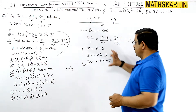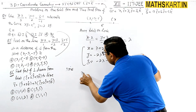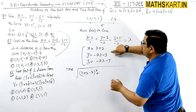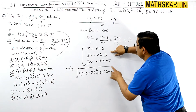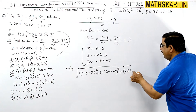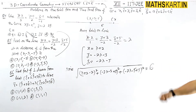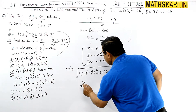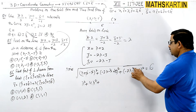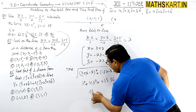Now we write the distance from this general point to the given point (2, -3, -5) and set it equal to 6. So distance equals: sqrt[(lambda + 2 - 2)² + (-2lambda - 3 + 3)² + (-2lambda - 5 + 5)²] = 6. This gives: sqrt[lambda² + 4lambda² + 4lambda²] = 6, so sqrt[9lambda²] = 6, which means 9lambda² = 36.